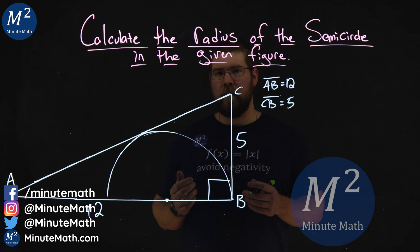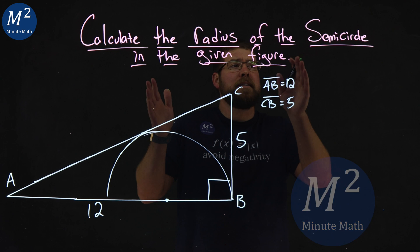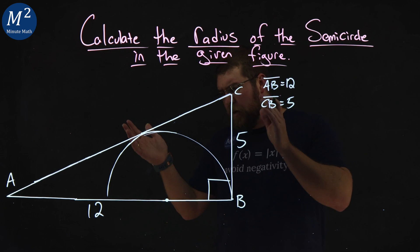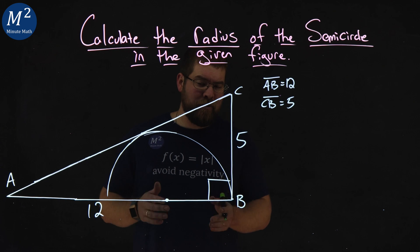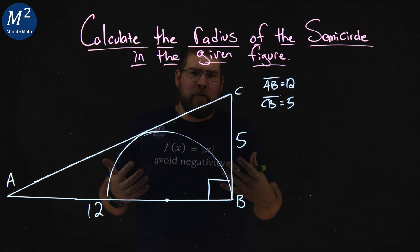Hi, I'm Sean Gannon, and this is MinuteMath, and let's solve this problem. We have to calculate the radius of a semicircle in the given figure. This figure, we have a right triangle, and we got a semicircle. I did my best to draw the circle freehand. Now, how do we solve this?